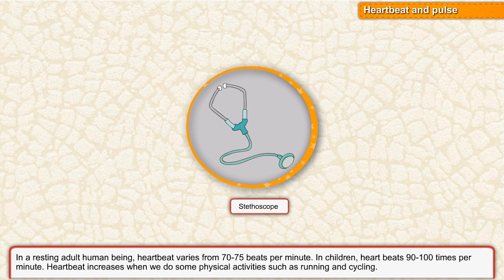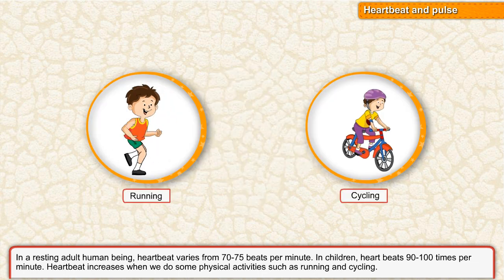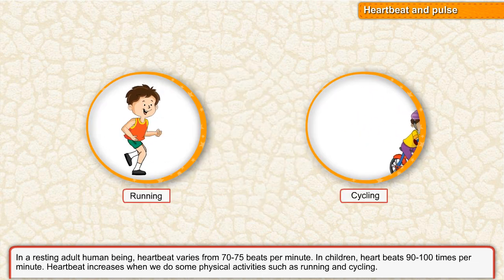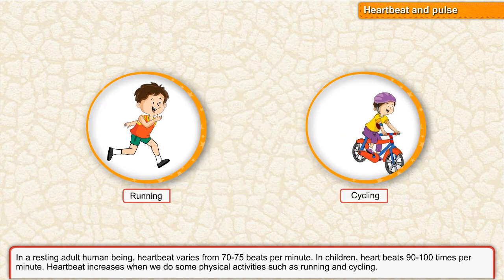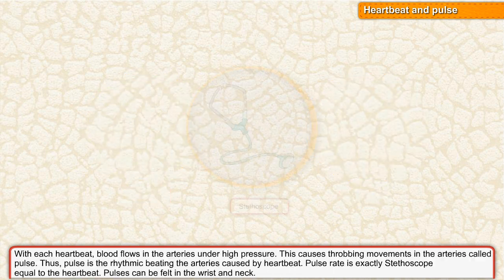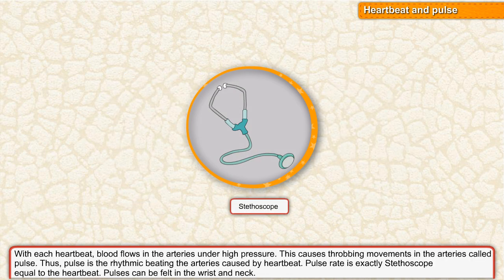In children, the heart beats 90 to 100 times per minute. Heartbeat increases when we do some physical activities, such as running and cycling. With each heartbeat, blood flows in the arteries under high pressure.